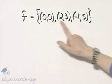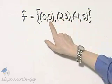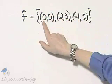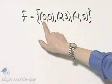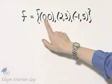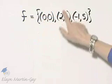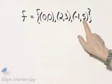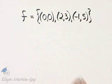Or you can simply look and see if every y goes with only one x. This y of zero goes with this x value only. This y of three goes with two only, and this y of five goes with negative one only.